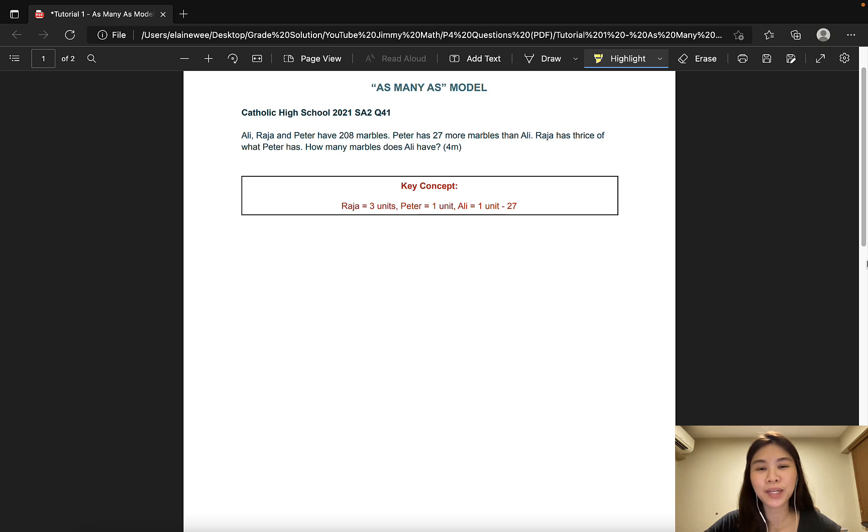A unit model is a model that consists of equal units and it involves two or more parties. Key words to look out for are as many as, a number as much, or words like twice or thrice that describes the relation between two or more parties. Using two questions from past year SA2 papers, I will show you how drawing models can help us visualize the question better and solve it with ease.